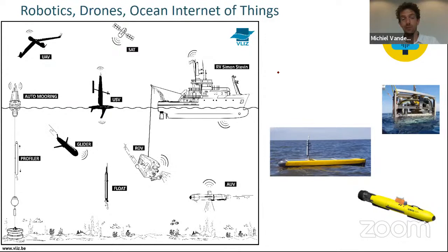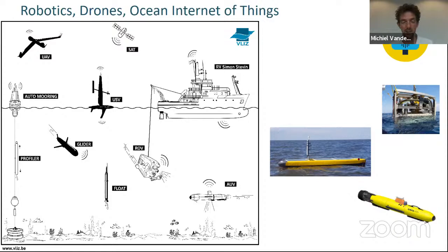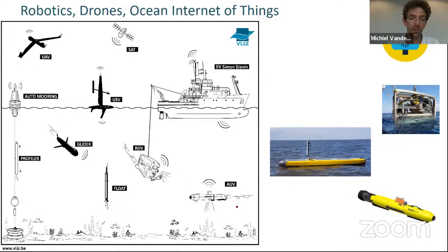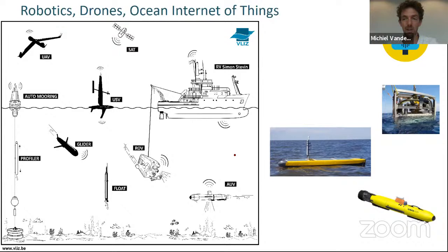Looking at robotics and the ocean internet of things: we have been developing a robotics center at the Flanders Marine Institute, with a clear ambition to contribute to this ocean internet of things — moving towards a system where there is communication between various sensors, being it profilers, moorings, or autonomous vehicles such as uncrewed surface vehicles or autonomous underwater vehicles. These can take data that have been measured and transfer them through satellites or through a nearby passing ship automatically, to increase the amount of data and information we have, moving towards this digital ocean twin.